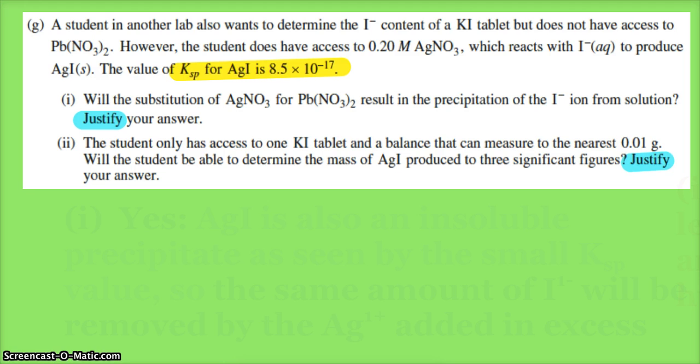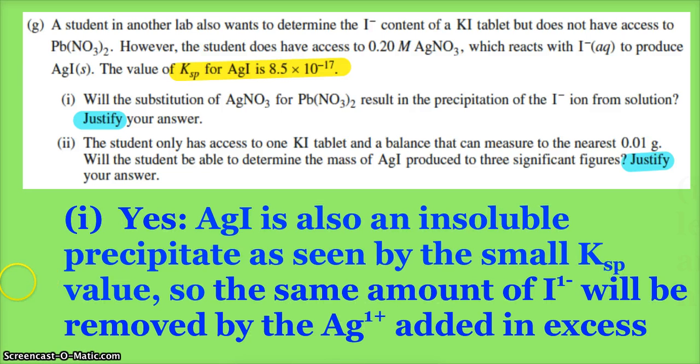A student in another lab wants to determine the iodide content of a potassium iodide tablet but does not have lead(II) nitrate. However, we do have silver nitrate, and that of course will react with iodide and produce silver iodide solid. Ksp is 8.5 × 10⁻¹⁷—so that should indicate to you that silver iodide is not very soluble at all. That would be a good choice as a precipitate that you could gravimetrically analyze. Will the substitution result in the precipitation? Yes, and you should probably note that Ksp value, whether by number or just by mentioning it's also an insoluble precipitate—we see the small Ksp. So the same amount of iodide would be removed by silver added in excess, just as we did with the lead(II).